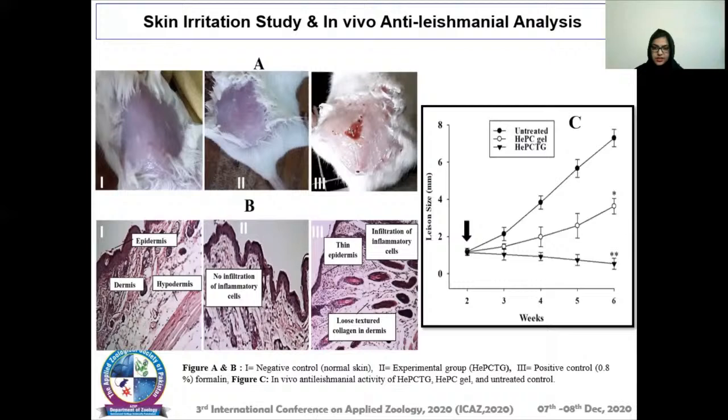We performed a skin irritation study and histopathological study. The positive control of 0.8% formalin produced toxic effects — the epidermis became thin and loose texture was observed. In the case of the gel there was no toxic effect, proving the gel was quite safe. In vivo anti-leishmanial assay showed the lesion size was reduced in HEPC-TG, our formulation, compared to the untreated and HEPC gel groups.